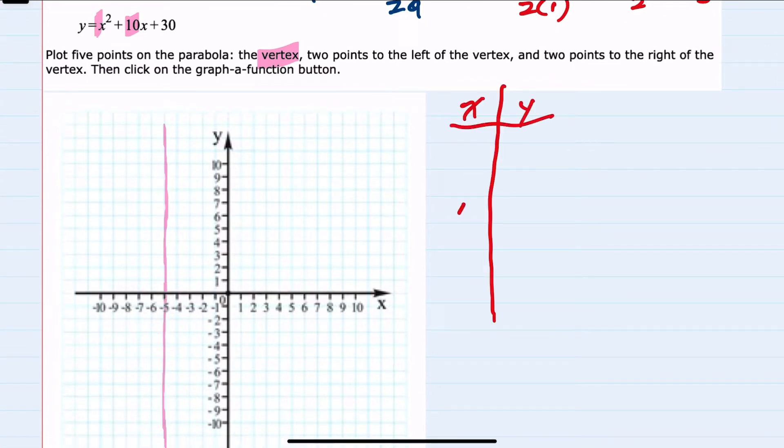So x equals negative 5 will be our axis of symmetry, and since I'm looking for 5 points, I'll use the axis of symmetry, which will be the vertex, for one of those values to plug in. So 2 points to the left, I could use negative 6 and negative 7. 2 points to the right, use negative 4 and negative 3.